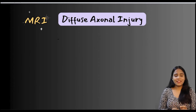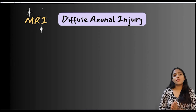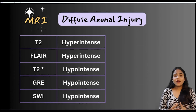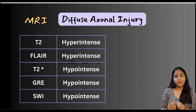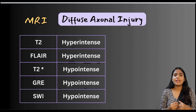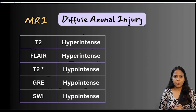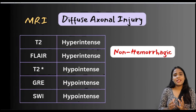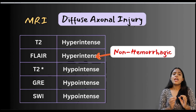MRI is superior to CT for detecting diffuse axonal injuries. The useful MRI sequences are T2, T2 FLAIR, T2 star, GRE (gradient recalled echo), and SWI (susceptibility weighted imaging). Lesions appear hyperintense on T2 and T2 FLAIR, whereas they appear hypointense on T2 star, GRE, and SWI. Majority of DAIs are non-hemorrhagic; FLAIR is the best sequence for detecting non-hemorrhagic DAI, and SWI is best for hemorrhagic DAI.